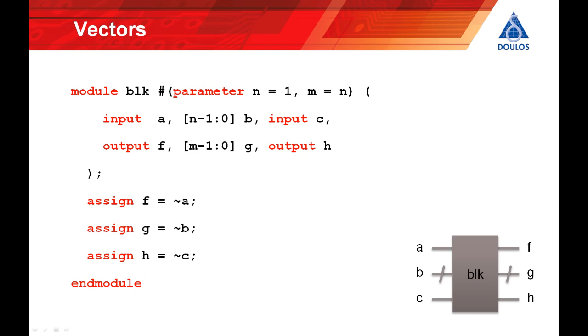Parameters are defined on the first line of the module before the ports using the syntax you can see here. In this particular case we've got a module with two integer parameters N and M where N defaults to 1 and M defaults to N. Overriding parameter values is always optional and if a parameter is not overwritten then it takes the default value from its declaration.